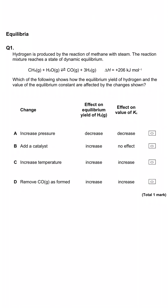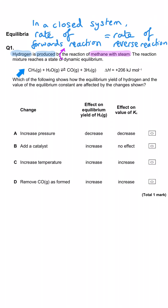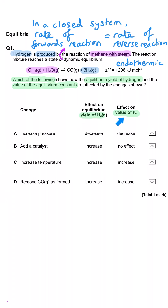Hydrogen is produced by the reaction of methane with steam. The reaction mixture reaches a state of dynamic equilibrium and we're shown the reversible reaction for this. We're also shown the enthalpy change, which is a positive one, meaning the forward reaction is endothermic. Which of the following shows how the equilibrium yield of hydrogen and the value for the equilibrium constant Kc are affected by the changes shown?